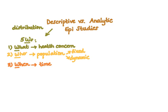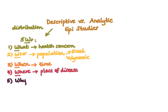Number three, the third W is 'when,' referring to the time factor — when does a disease occur? For example, influenza peaks in the wintertime. Number four, the fourth W refers to 'where,' or the place of disease — where does this disease occur? An example: prostate cancer arises at a greater rate at higher latitudes, which refers to geography. Number five, our last W stands for 'why' and refers to the causes or risk factors of a disease. While it is listed under descriptive studies, it also falls into the category of analytic studies.